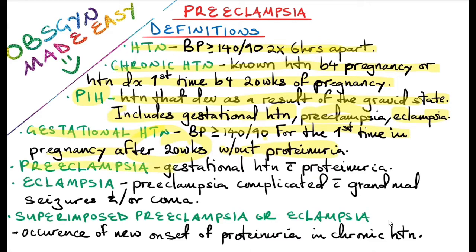Preeclampsia is gestational hypertension with proteinuria. Eclampsia is preeclampsia complicated with grand mal seizures and/or coma. Superimposed preeclampsia or eclampsia is an occurrence of new onset of proteinuria in chronic hypertension.